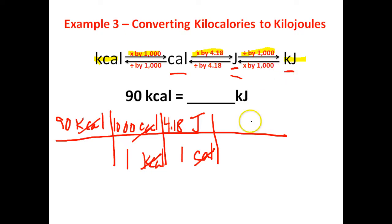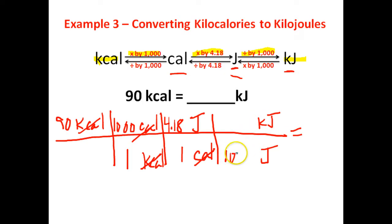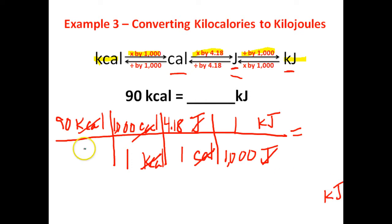But we don't want to be right here — we want to figure out how many kilojoules this is. So we have to come up with another equivalent statement. We want to cancel out joules, so that goes at the bottom, and we're trying to find kilojoules, so that goes at the top. The prefix kilo means 1,000, so there are 1,000 joules in a kilojoule. We have joules on top and joules on bottom — they cancel out, leaving you with kilojoules. So now we just get our calculator out and take 90 times 1,000 times 4.18 divided by 1,000. But you've got 1,000 on top and 1,000 on bottom, so those cancel out as well. Ultimately, all we need to do is take 90 times 4.18 and we'll get our answer: 376.2.